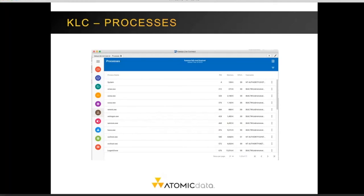The Processes tab shows any processes that are currently running. You can sort by memory, CPU, username, or process ID. This gives you the ability to stop or force-stop any processes running on the system.